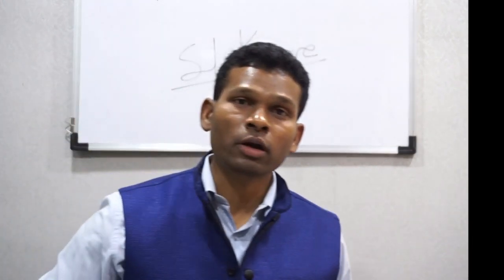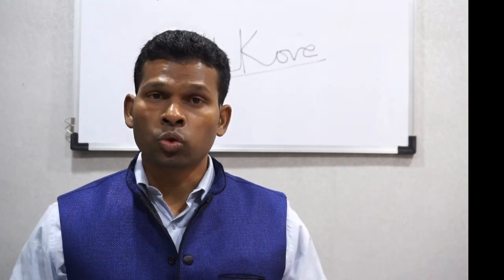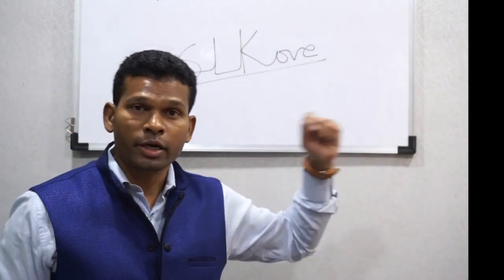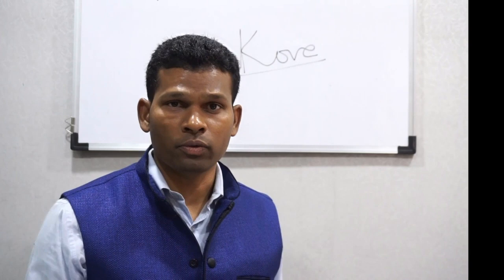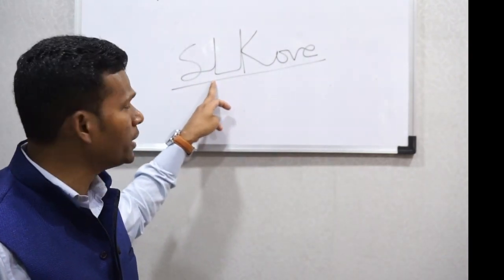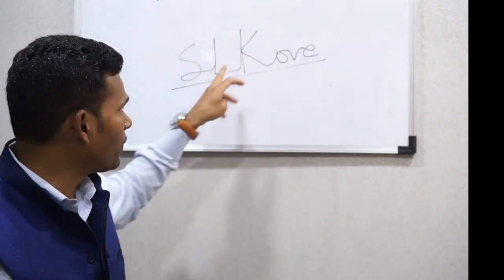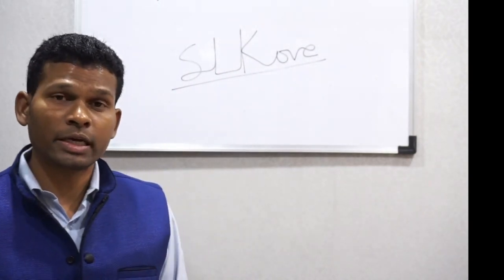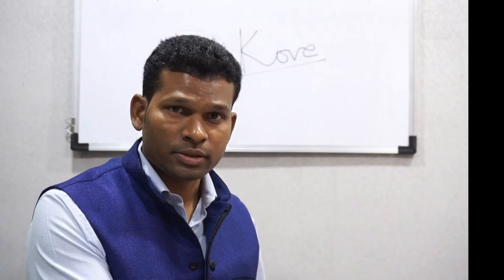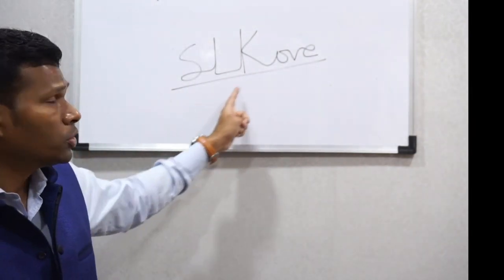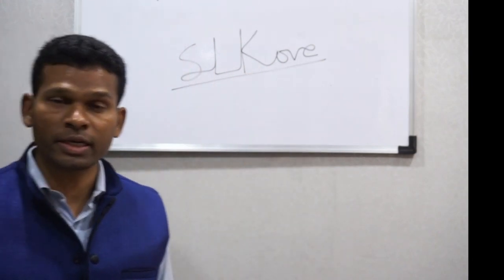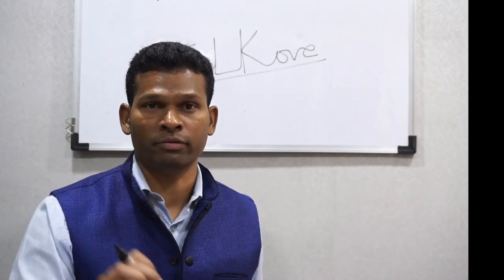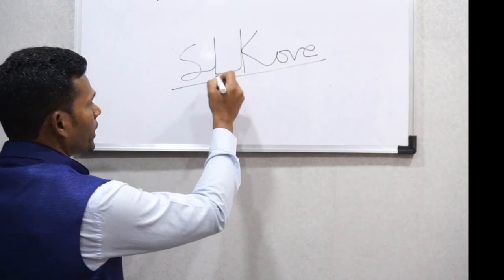When S, L, and K are all connected, it means that whatever is happening with S gets connected to L, and K gets connected to L as well. Whatever journey the individual has will affect his entire family — his father, his mother, his behavior as a father, his behavior as an emotional person. When all three letters are connected, it means your entire family will be affected by whatever you are doing in your life.